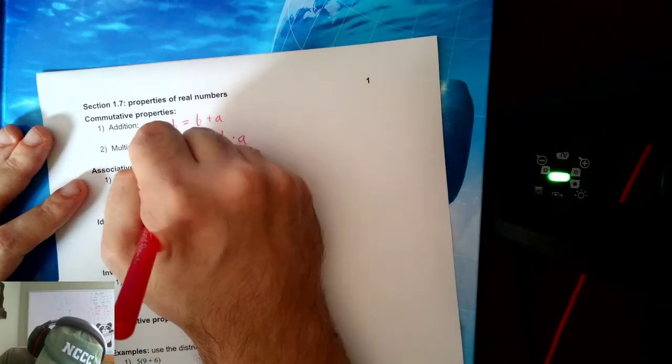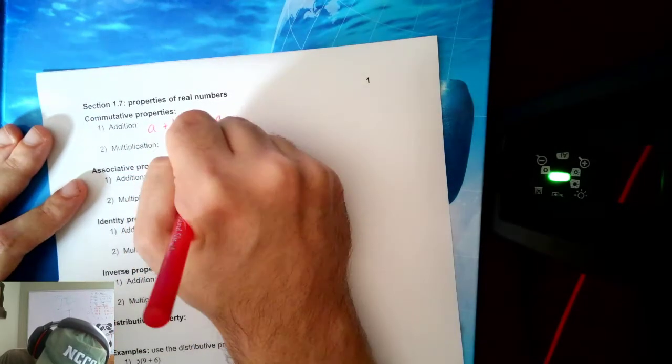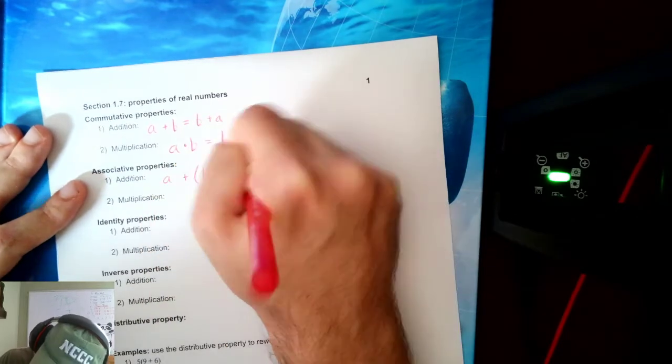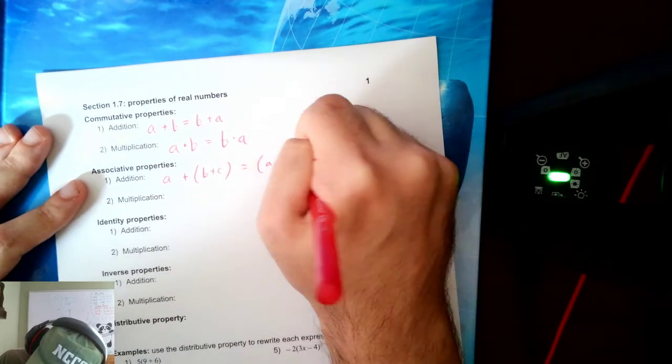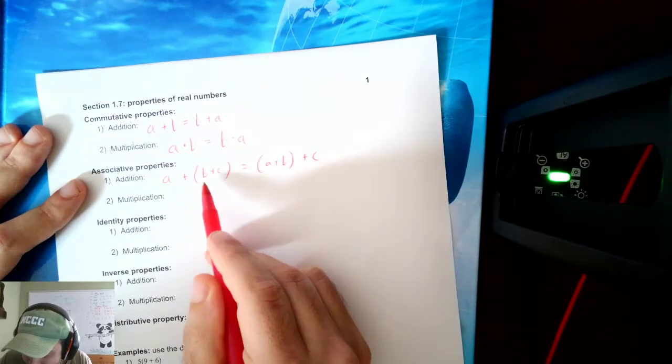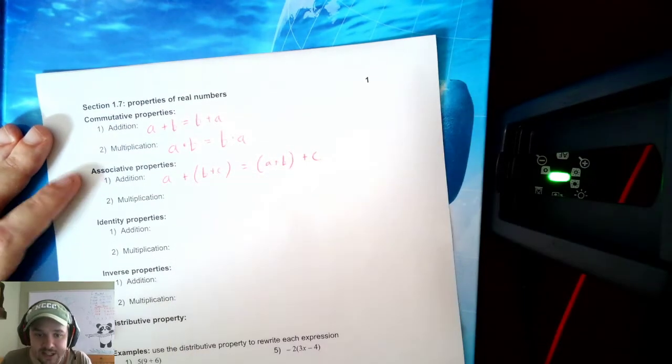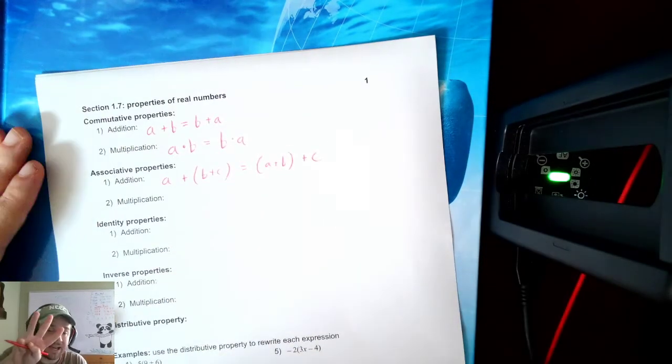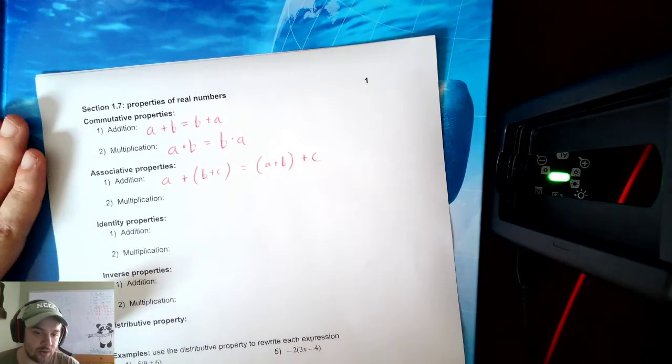Associative, well that tells me that if I want to add three numbers, I can either add the first two or add the last two and it doesn't change the result. If you want to combine three things, you can choose which order you add them in.